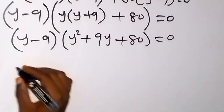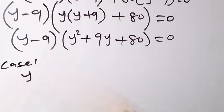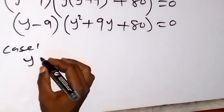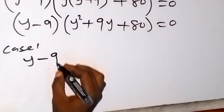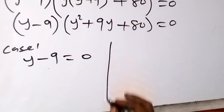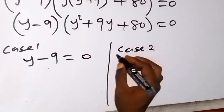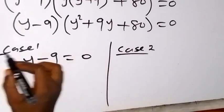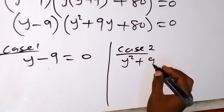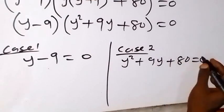We now have two cases. Case 1: y minus 9 equals 0. Case 2: y squared plus 9y plus 80 equals 0.